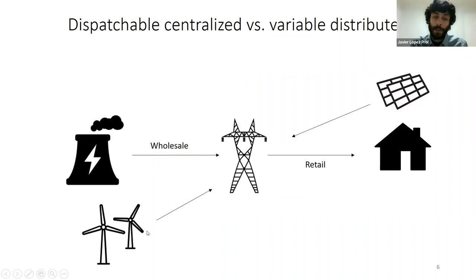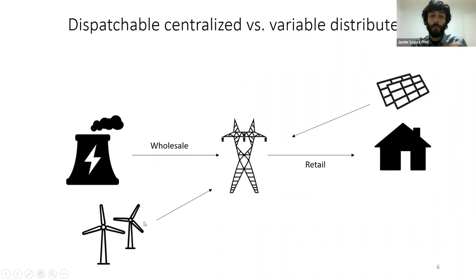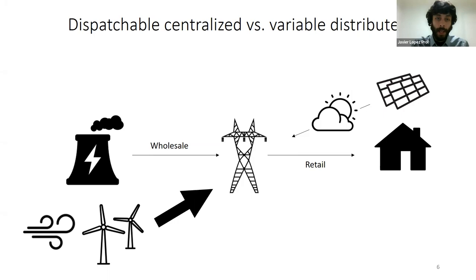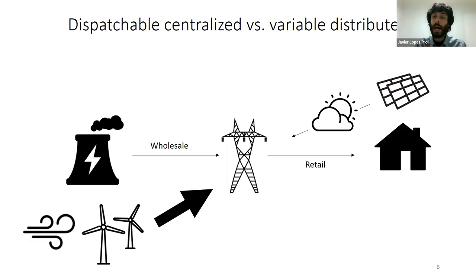Variable renewables are different in at least two main ways. First, they can be installed decentralized — we can install small PV panels on our rooftop and generate electricity ourselves. Electricity can now also be generated from the retail side and fed into the grid directly from the demand side, something that before was non-existent in most places. Renewable plants are much smaller and can be installed much more diversified in spatial terms, but they are also variable — producing just depending on weather patterns — causing new phenomena such as variability and self-consumption.